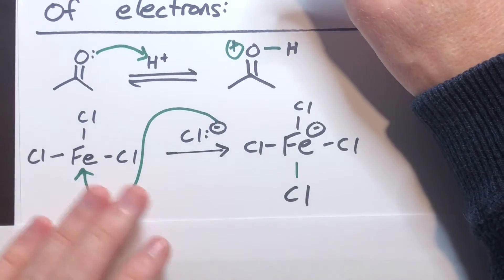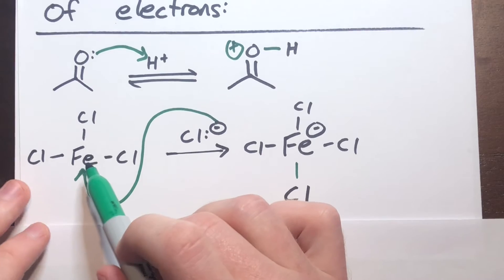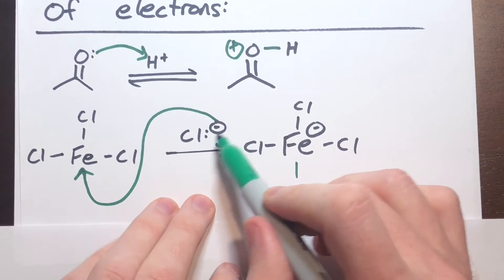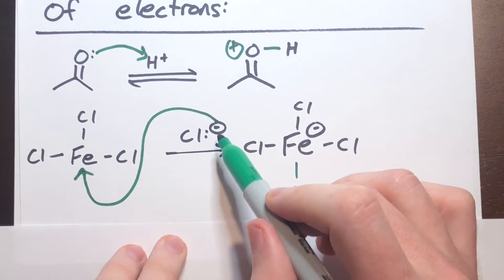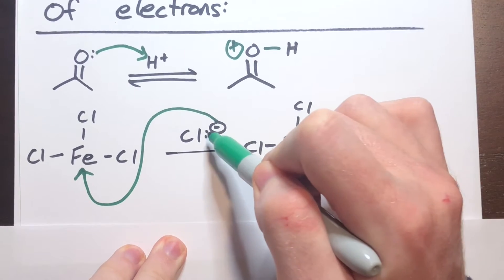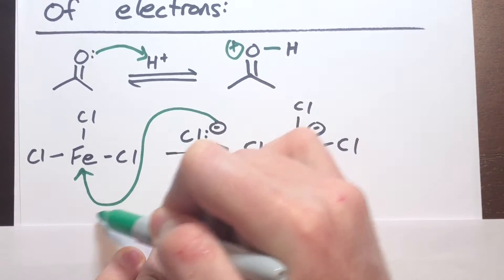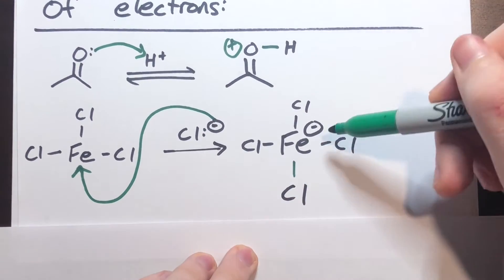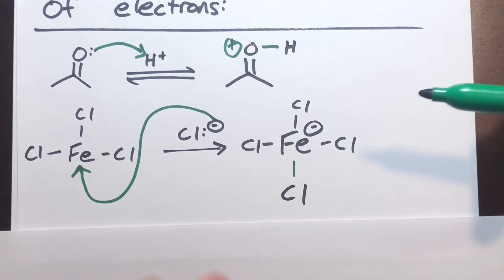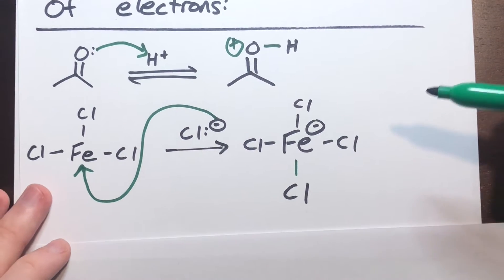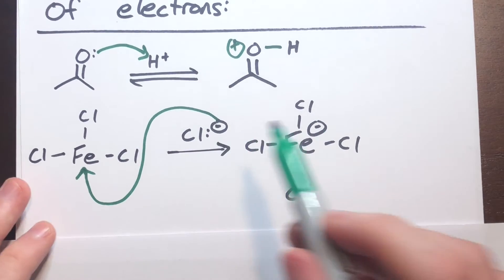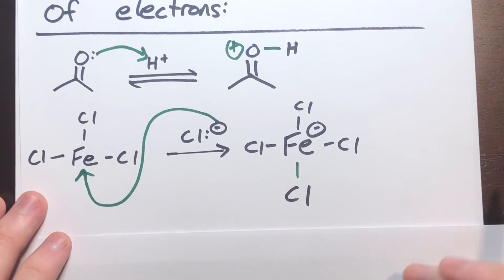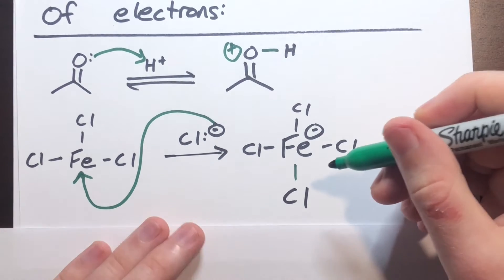Looking at another example: here we have iron chloride, which has an iron bound to three chlorine atoms, and a negative chlorine ion that can use one of its lone pairs — its negative charge — to create a bond with the iron. The iron then takes on a negative charge to conserve the charge. Since we introduced this negative, our product has to have a negative to conserve everything, and that is a requirement.